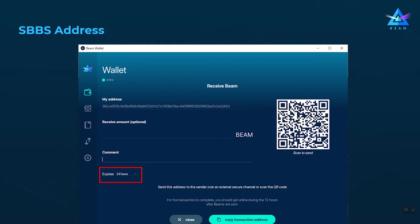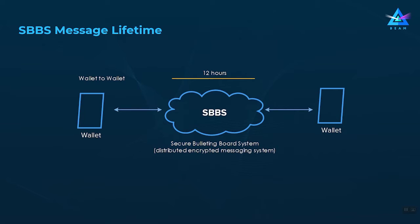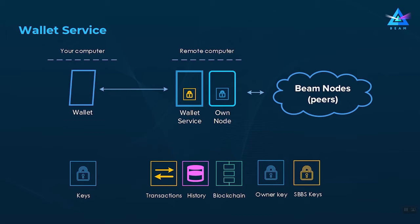Changing expiration to 'never' is only recommended for special cases like constantly receiving mining rewards to the same address. For regular transactions, the default is recommended. In addition, the SBBS message itself only lives within the system for 12 hours before it expires. In practice, when you send Beam, the other wallet must wake up and reply within a few hours, and you also need to be online within the next 12 hours to receive the reply and complete the transaction.